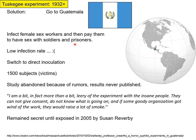So they switched to direct inoculation — giving people direct injections of syphilis and gonorrhea to see whether penicillin protected them. They did this to 1,500 subjects. The study was eventually abandoned because rumors started about what was going on in Guatemala. It remained secret until 2005 when a reporter found a quote from one of the people running the experiment: 'I'm a bit leery of the experiment with the insane people — they cannot give consent, do not know what is going on, and if some goodie organization got wind of the work, they would raise a lot of smoke.' The people running this experiment knew what they were doing was wrong, but kept doing it anyway.